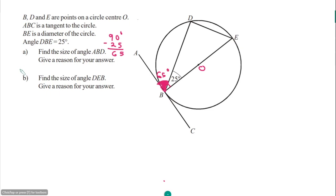Problem five: finding angles H and I. The angle in the triangle: 65 plus 50 equals 115, so 180 minus 115 equals 65 degrees for the third angle. Angle I is alternate to this 65-degree angle, so I equals 65 degrees. Angle H is alternate segment to the 50-degree angle, so H equals 50 degrees.